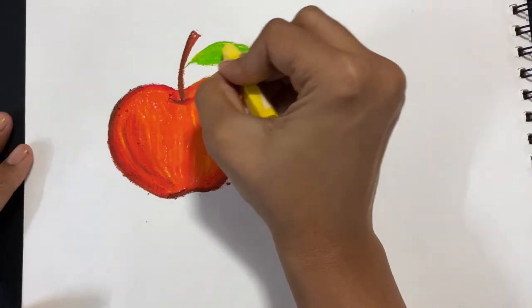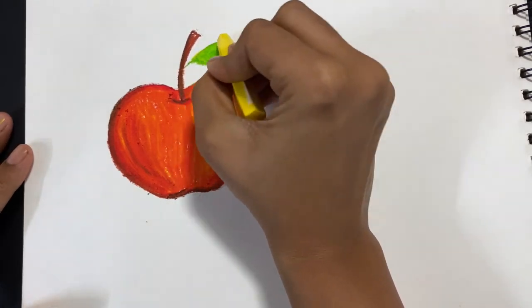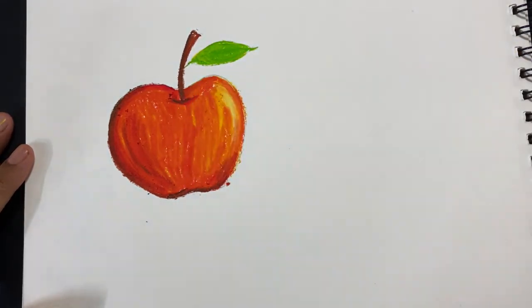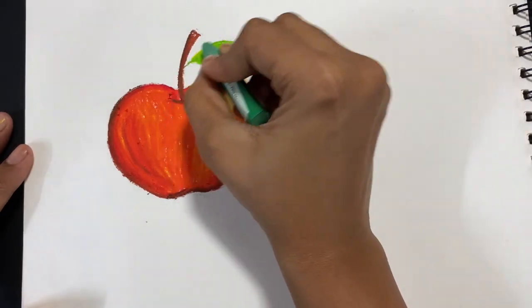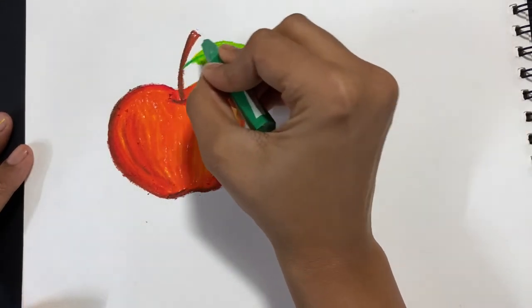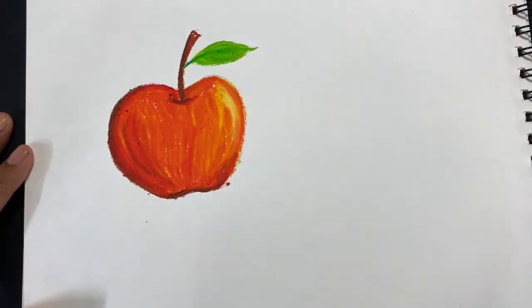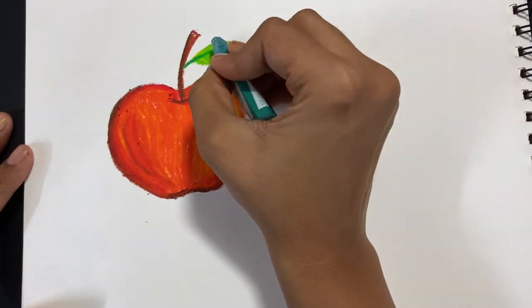Here for the leaf, I'm going to be using green and then some yellow, and I'll use some darker green to add in more details. I will not be doing an outline for this because I feel like it looks nice even without that, so I'm just going to leave it as it is.